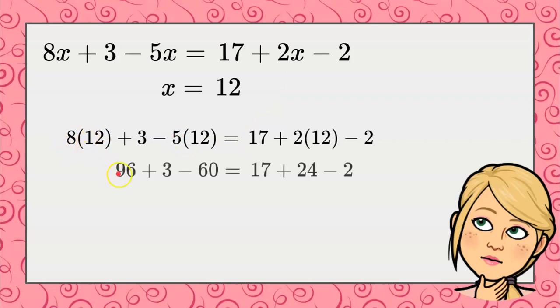So 8 times 12 is 96, plus our 3. 5 times 12 is 60. Here's our 17. 2 times 12 is 24.